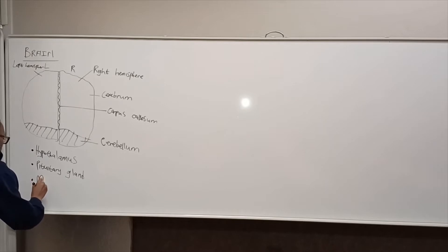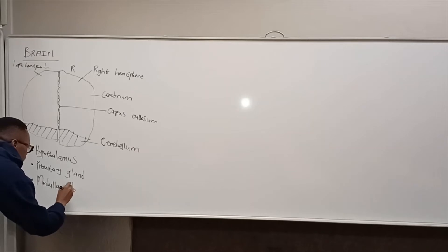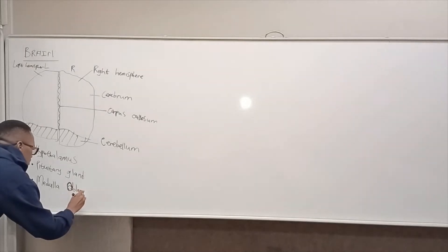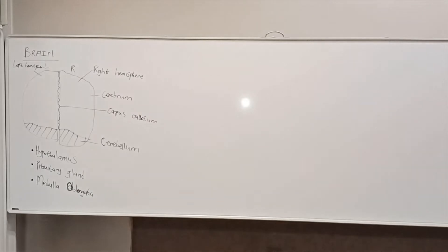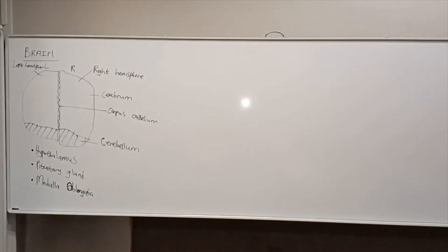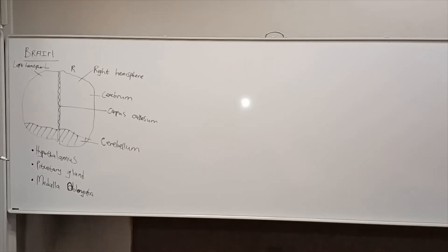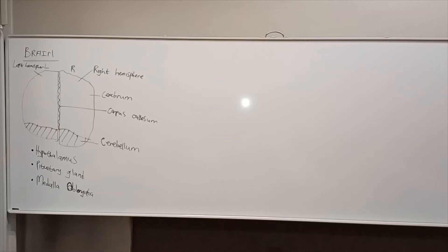The most common part is called the medulla oblongata. The medulla oblongata is a very well-known part of the human brain, recognized even by those outside biology and life sciences. People often like using the name — for example, saying 'use your medulla oblongata to think.'